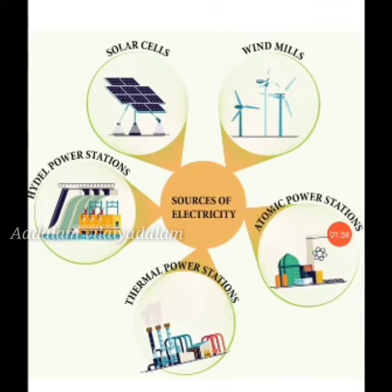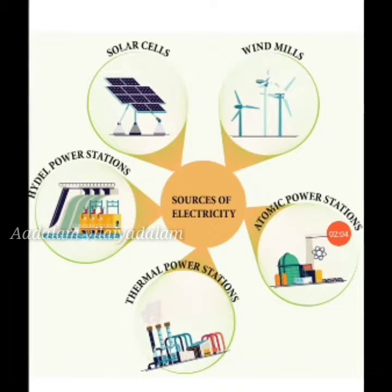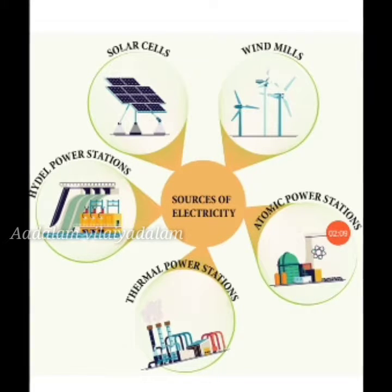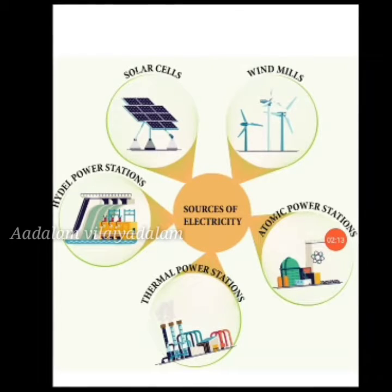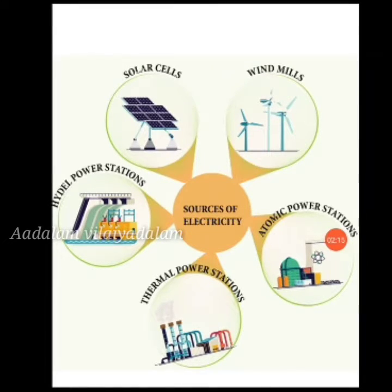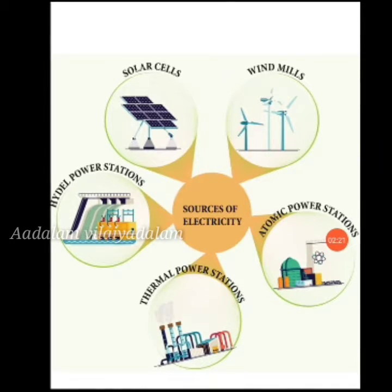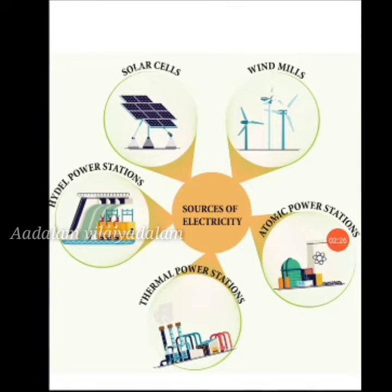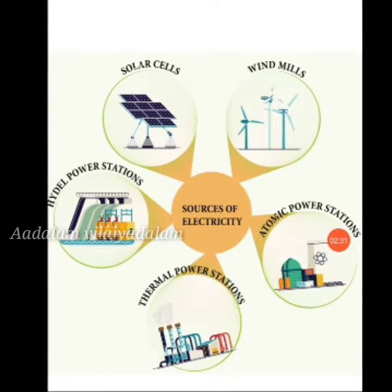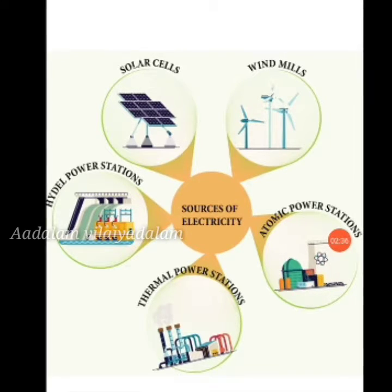These plants are constructed depending upon the natural resources available at that particular place. For example, major thermal stations in Tamil Nadu are at Neyveli in Cuddalore district and Ennur in Tiruvallur district. Hydel power stations are at Mettur in Salem district and Papanasam in Tirunelveli district. The atomic power station is at Kalpakkam in Kanchipuram district and Kudankulam in Tirunelveli district.